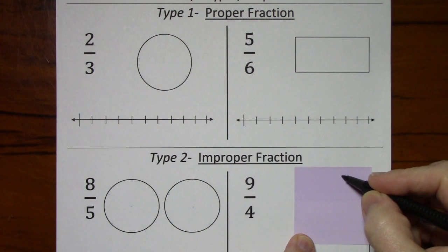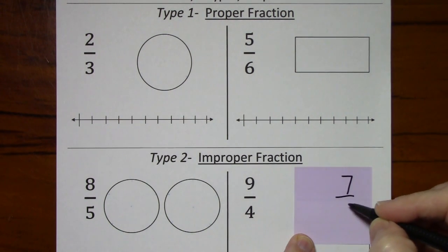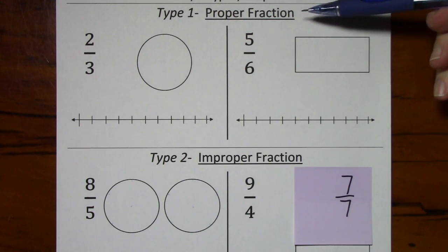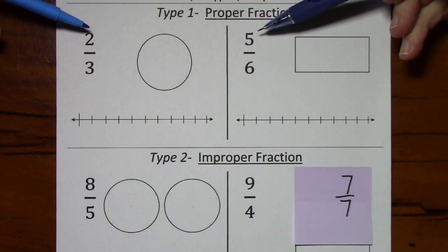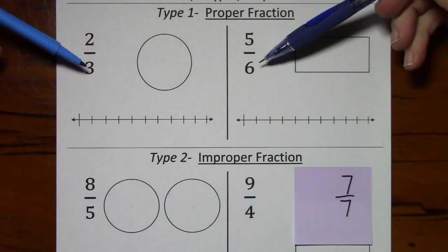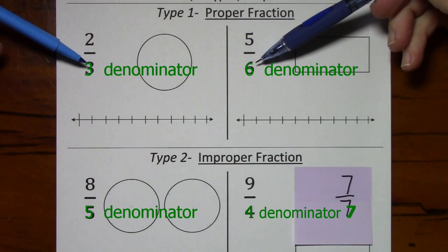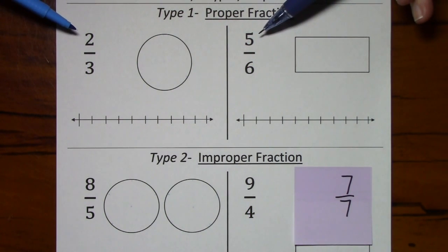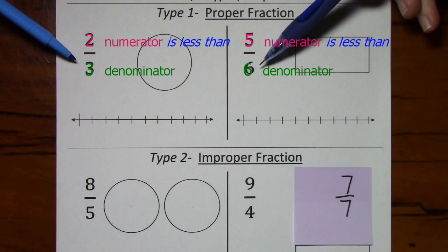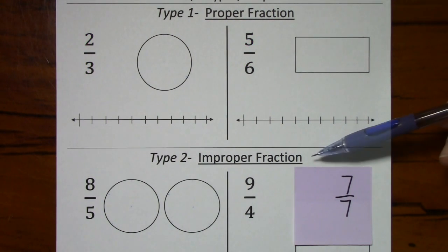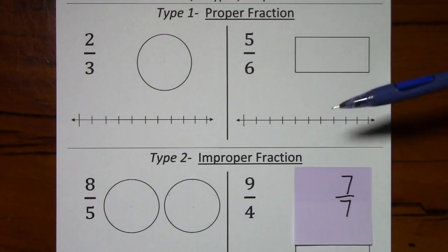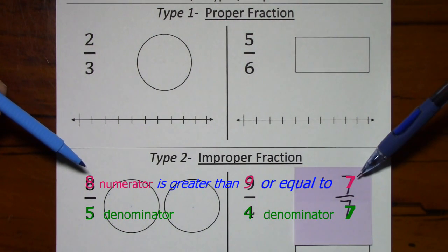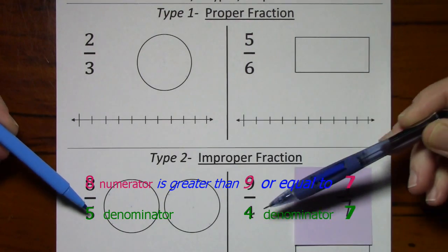Another example of an improper fraction would be seven-sevenths. For any type of fraction, the top number is the numerator and the bottom number is the denominator. With proper fractions, the numerator is less than the denominator. With improper fractions, the numerator is greater than or equal to the denominator.